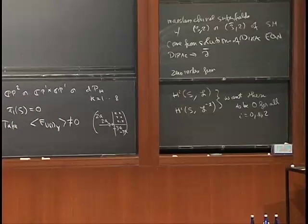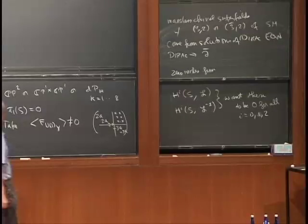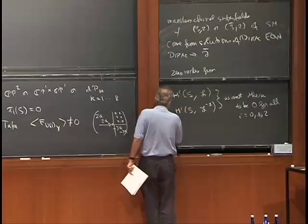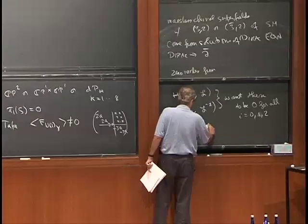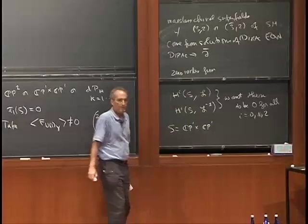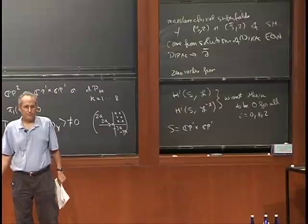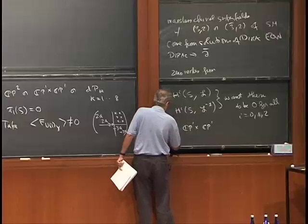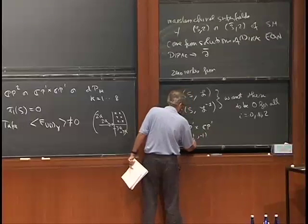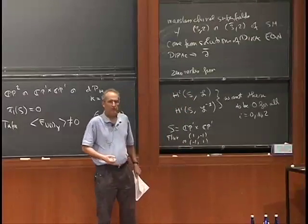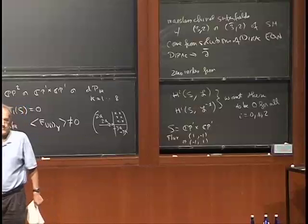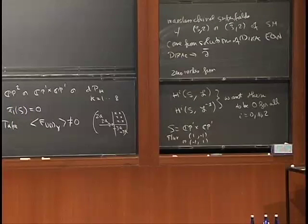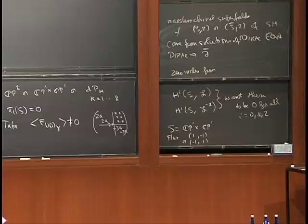And if the (3,2)s transform in L, then the (3-bar, 2)s transform in the opposite line. The (3-bar, 2)s have the opposite U1 charge from the (3,2)s. So for them, the line bundle L is replaced by L inverse. We want these cohomology groups to be 0 for all i equals 0, 1, or 2. It turns out that condition determines what L has to be. Up to a diffeomorphism of S, there's only one L that works. For example, if S is CP1 times CP1, then L is characterized by how many units of magnetic flux there are on the two CP1s, and the flux has to be (1, -1) or (-1, 1). These two cases are equivalent up to exchanging the two CP1s, so in that sense there's only one model.